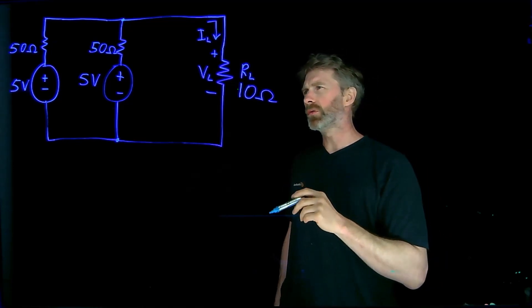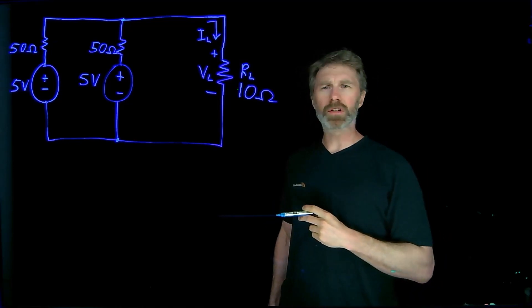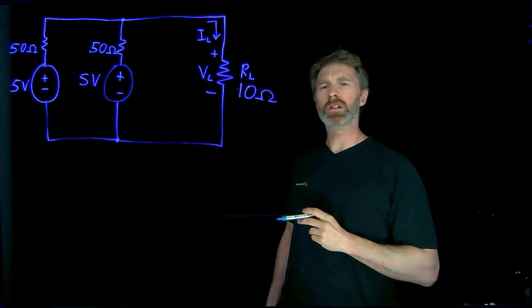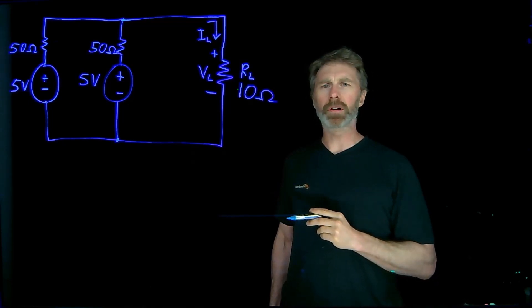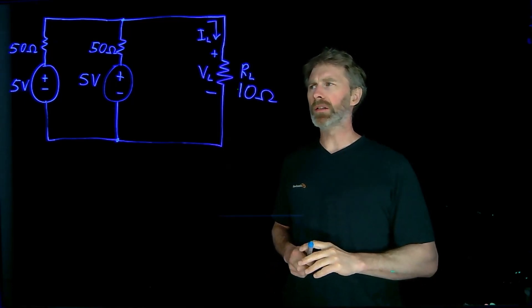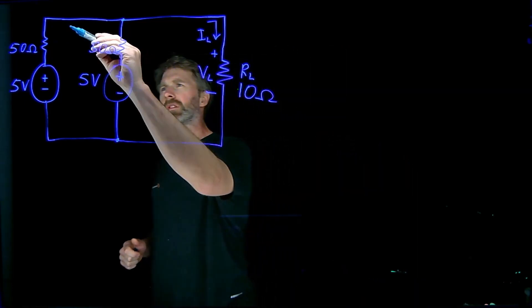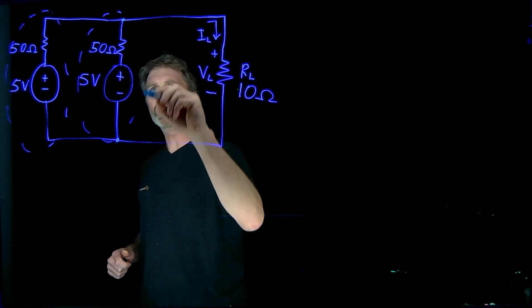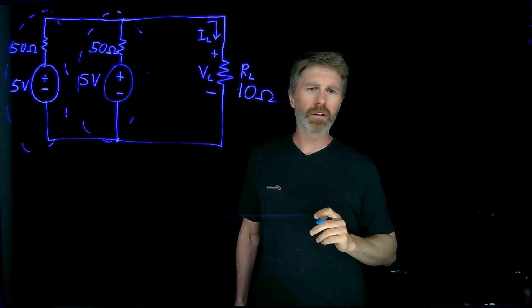Now, our typical tools of figuring out equivalent series and equivalent parallel resistors won't work here because we don't actually have any resistors that are in series or in parallel. But one tool that we can use is convert these voltage sources into the equivalent current source.